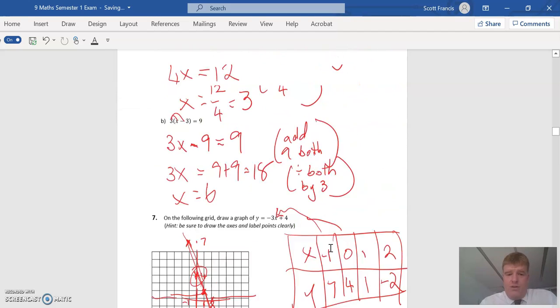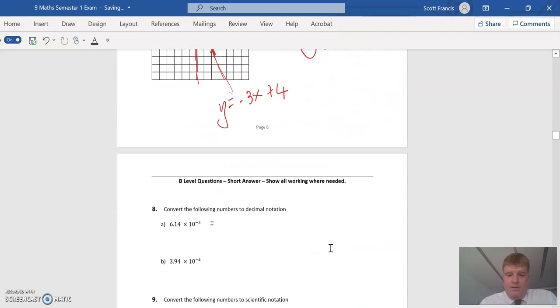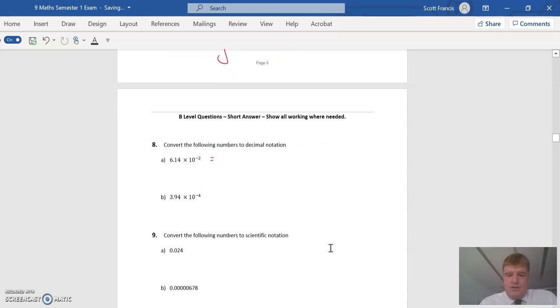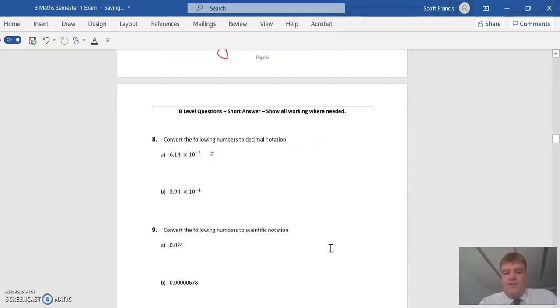Convert the following to decimal notation. 6.14 by 10 to the minus 2. So it's going to move two places. 0.0614. The other thing you remember is 6 is in the hundredths column.